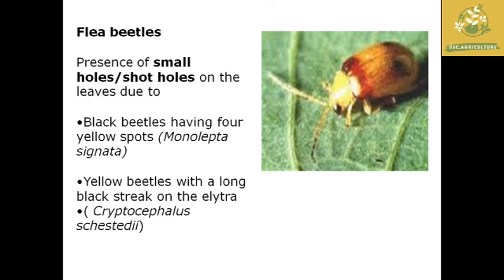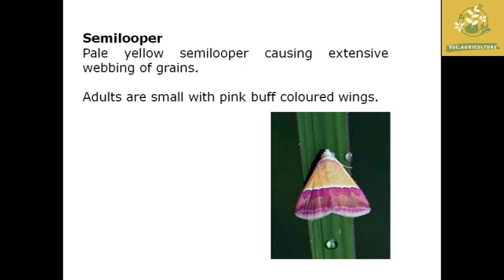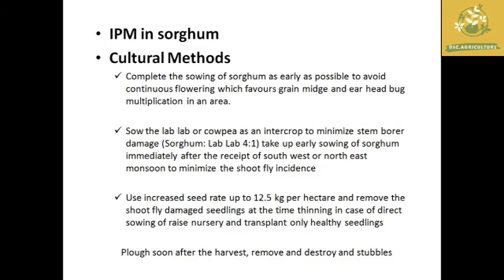Minor pests in sorghum include flea beetles, which cause small shot holes in leaves due to feeding. They are classified by color: black beetles with four yellow spots are Monolepta signata, and yellow beetles with long black streaks on the elytra are Cryptocephalus sp. Red spider mites are also minor pests, causing yellowing and reddish-brown discoloration of leaves, with fine silk webs on the underside of leaves and red-colored mites visible on the leaf surface. The semi-looper is pale yellow-green, causing extensive webbing of grains, with small pink buff-colored winged adults.